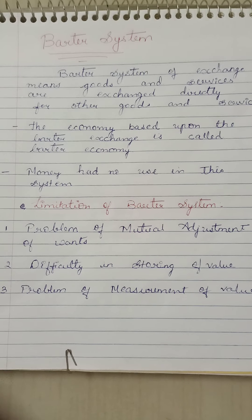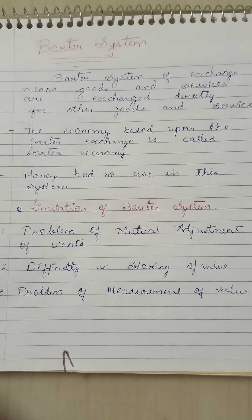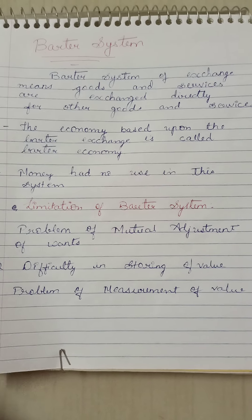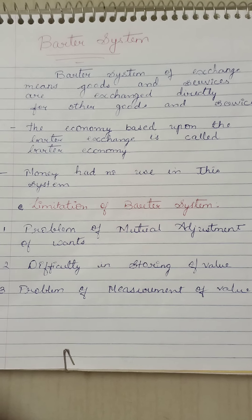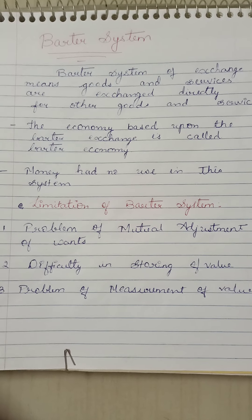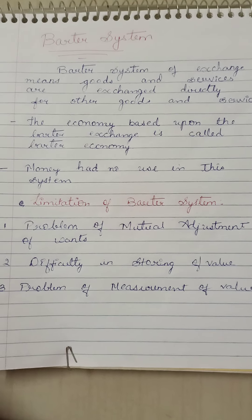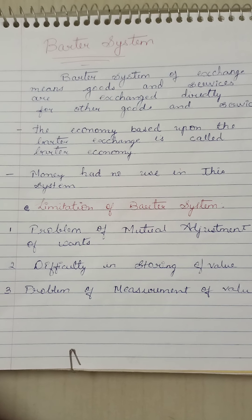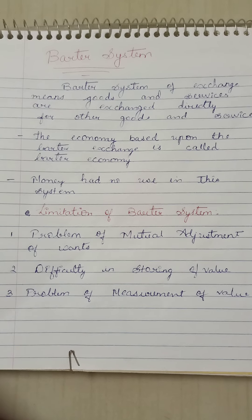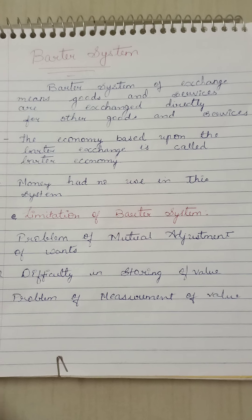These are the introduction and meaning portion of our barter system. I have written only three points, but I have explained many such points regarding the meaning and introduction of the barter system — you can write such points in your paper also. Now the second topic today is the limitation of the barter system. This limitation of barter system is also asked in the board exam paper, so it is quite important — prepare it thoroughly. The first limitation is the problem of mutual adjustment of wants, also called the double coincidence of wants.